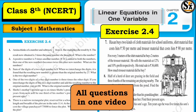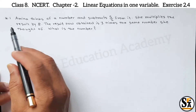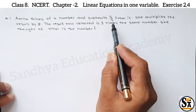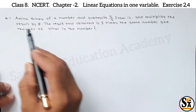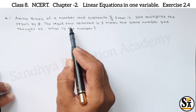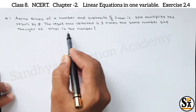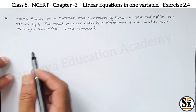Hello dear all, welcome to Sunday Education Academy. I am Santosh Wagh. In this video we will see how to solve all word problems from Exercise 2.4, Chapter 2 Mathematics of Class 8. Now let's start our video. Question number one: Amina thinks of a number and subtracts 5 by 2 from it, multiplies the result by 8. The result now obtained is 3 times the same number she thought of. What is the number?